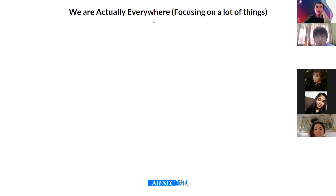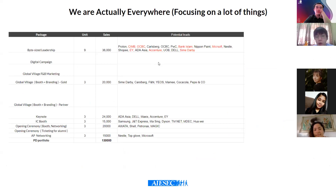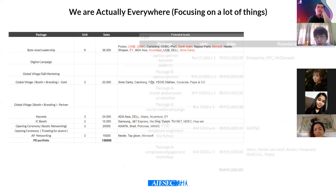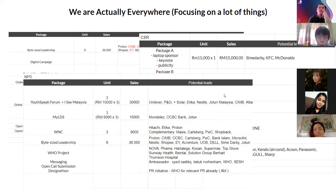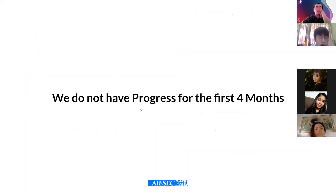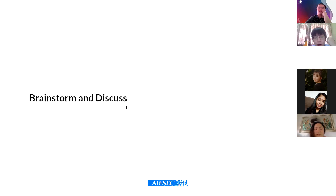We were everywhere - we focused on a lot of things. For MBP we thought about bite size sessions, and at that time we were thinking it was going to be physical, so we considered Campus Village, IC booth, CSR, laptop sponsorship, keynote publicity, social media campaigns, employer engagement workshops - many different things. From the MBP side it was the exact things we are doing: Youth Speak Forum, DS, WNC, bite size as well. We focused on so many things, and then we were a bit lost with no progress for the first four months. Some of you might have experienced that - you're doing a lot and working so hard, but there's no progress, and you start to wonder if you're doing the right thing.